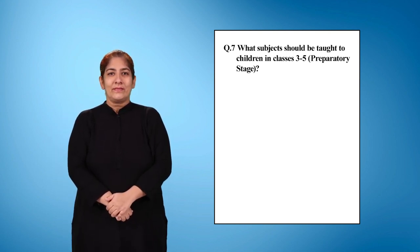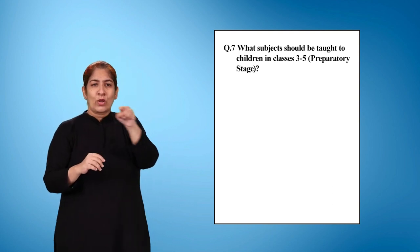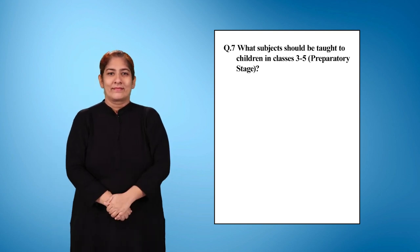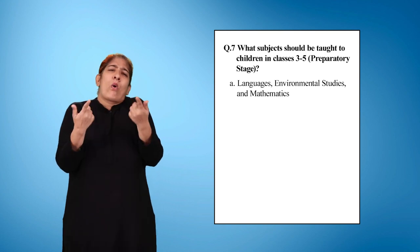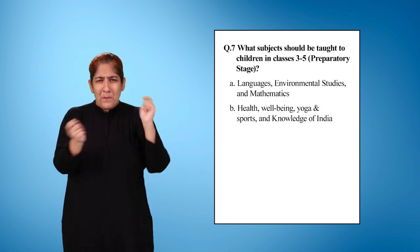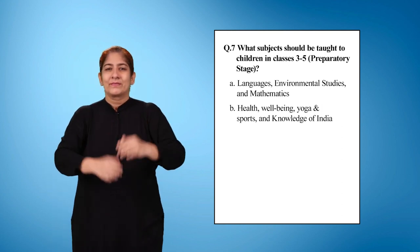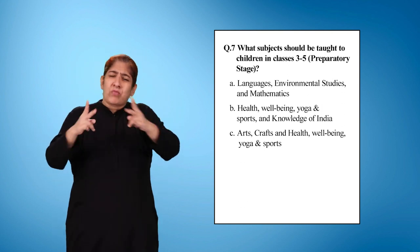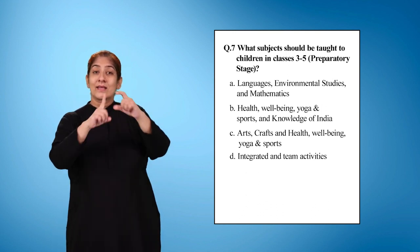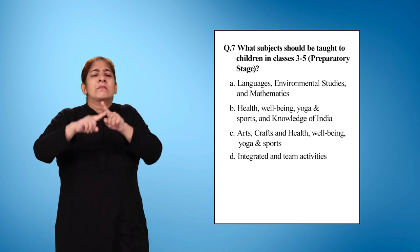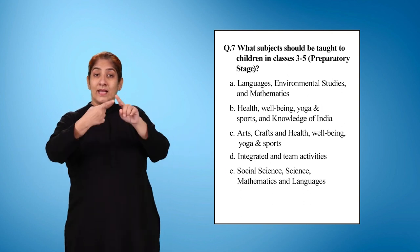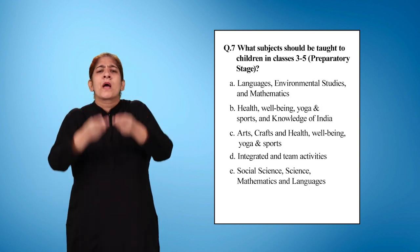Question 7: What subjects should be taught to children in class 3 to 5? Preparatory stage. Select one or more options. Option A: Languages, environmental studies and mathematics. Option B: Health, well-being, yoga and sports and knowledge of India. Option C: Arts, crafts and health, well-being, yoga and sports. Option D: Integrated and team activities. Option E: Social science, science, mathematics and languages.